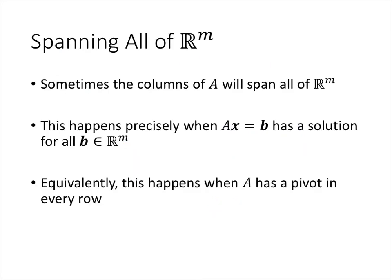Sometimes when we take the span of a set of vectors, the set spans the entire vector space. So sometimes the columns of A will span all of R^m — in other words, Ax equals B would have a solution no matter what B is. We know how to answer that question as well: that happens precisely when A has a pivot in every row.